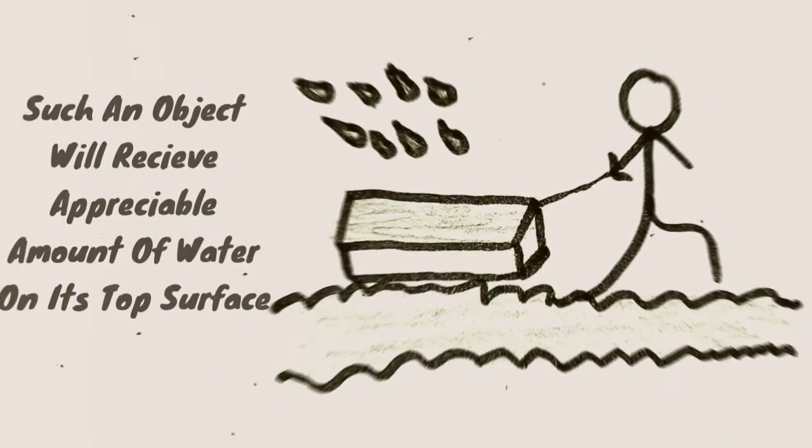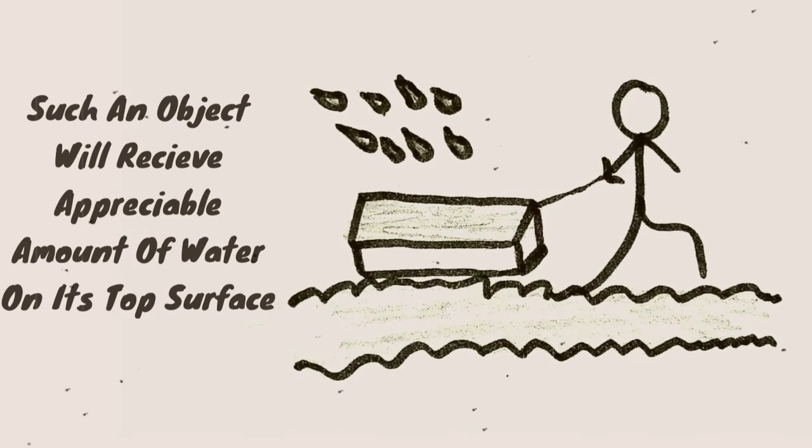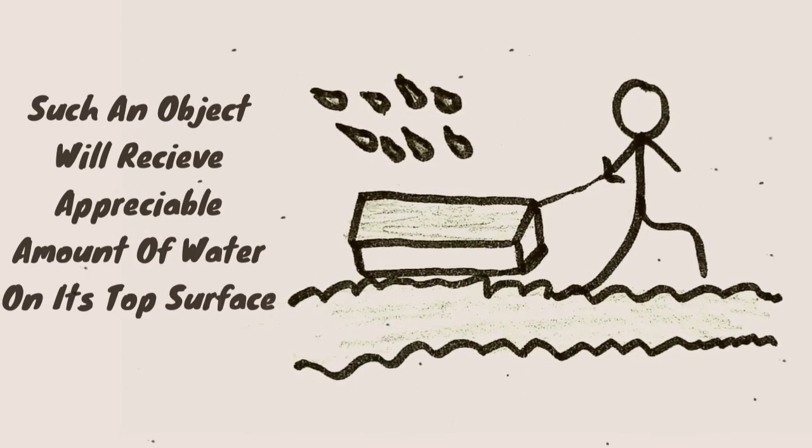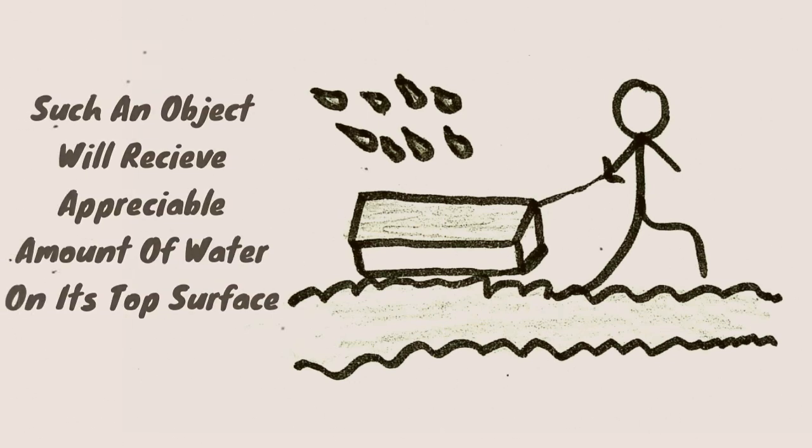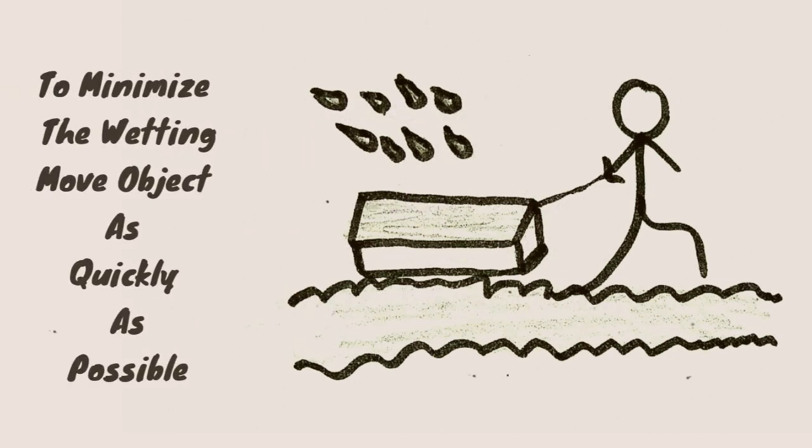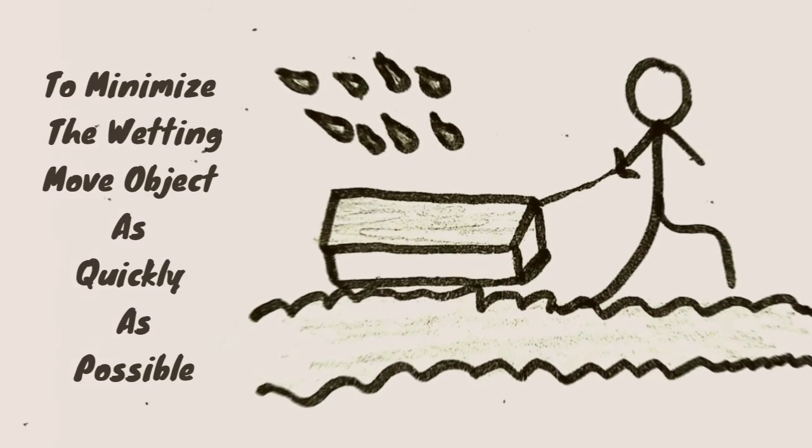Such an object will collect an appreciable amount of water at its top surface, even if its speed matches the horizontal speed of the raindrops. To minimize the wetting, such an object should be moved as quickly as possible.